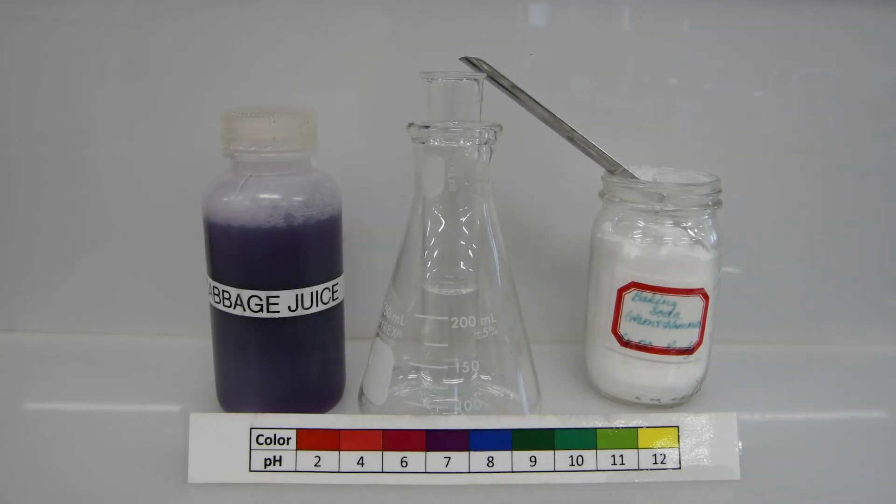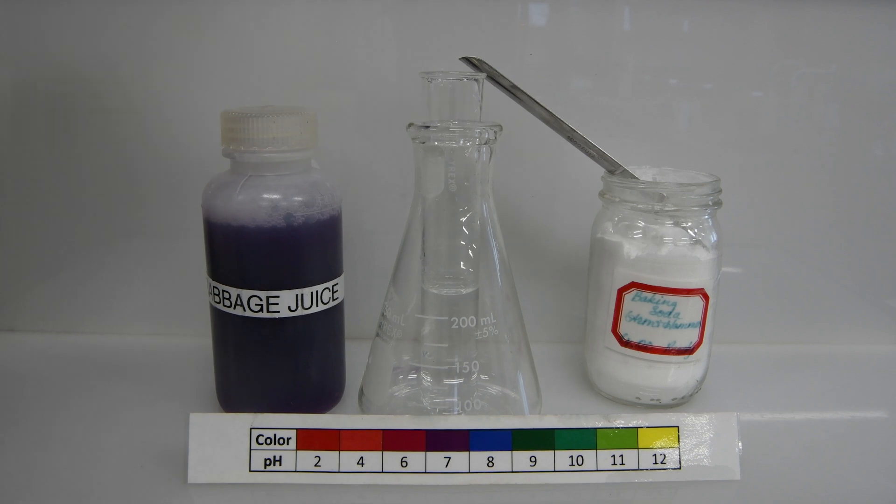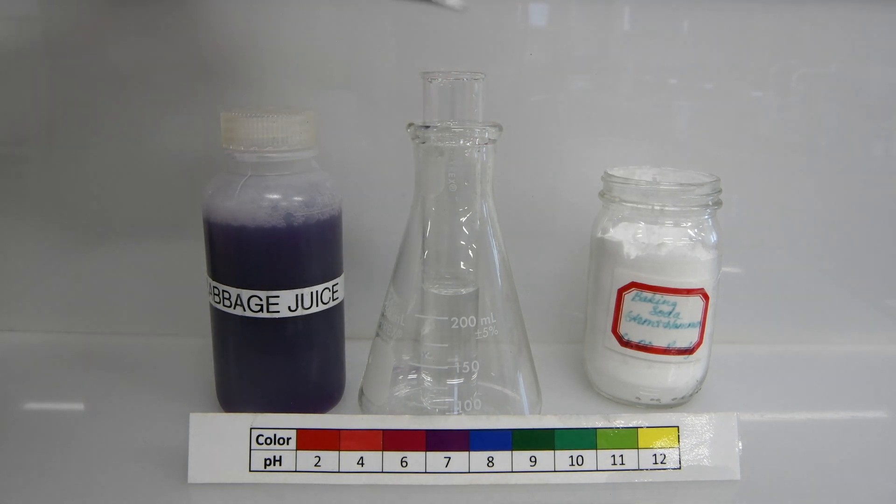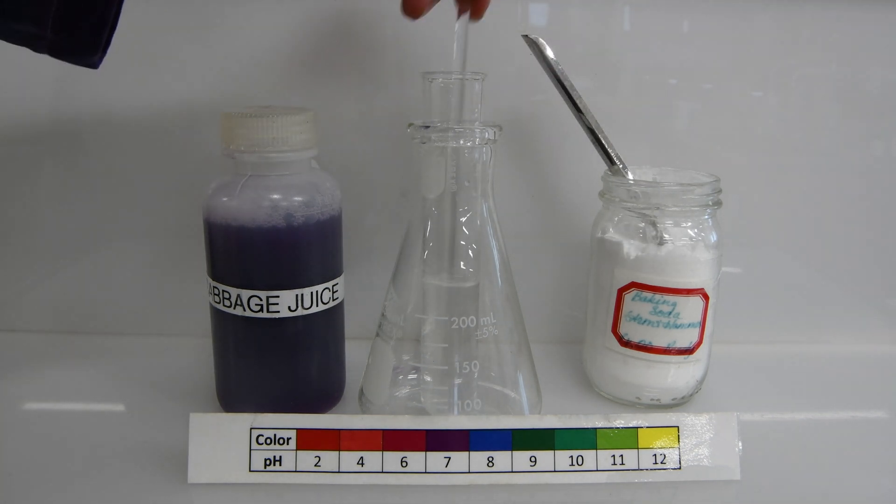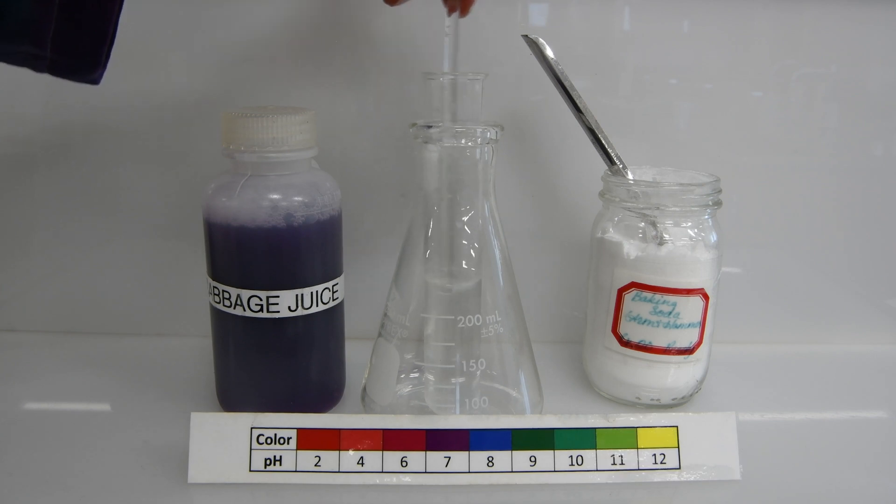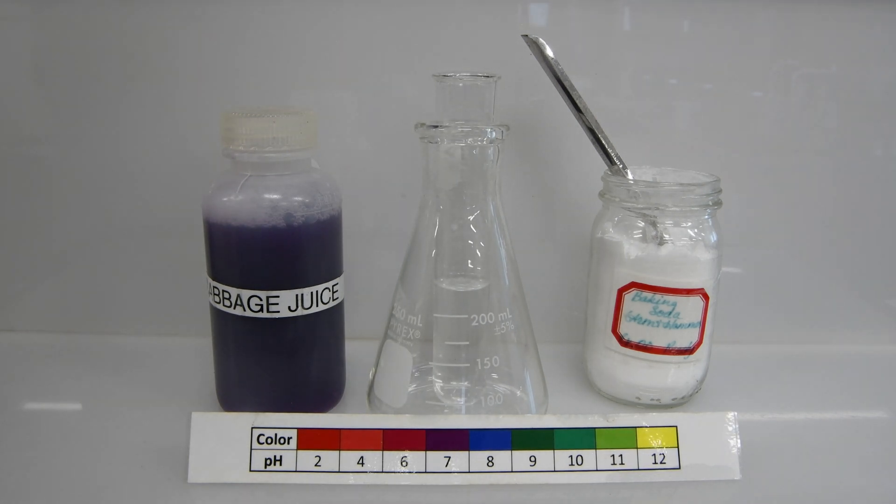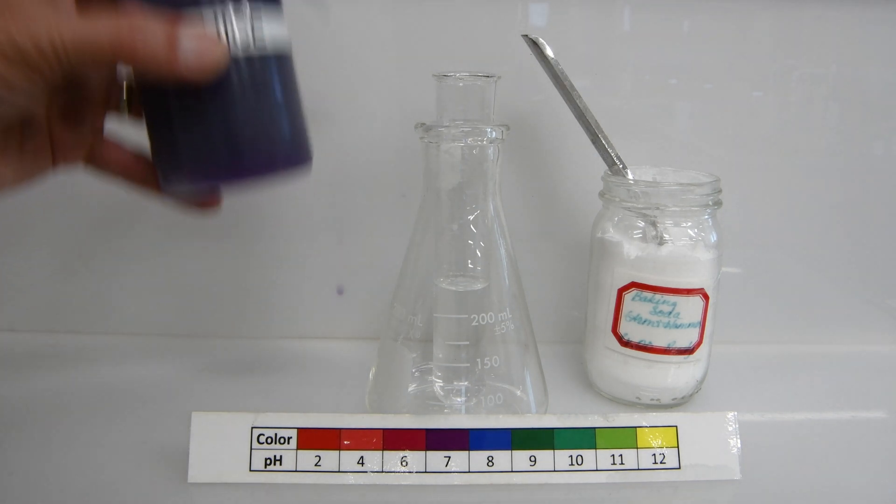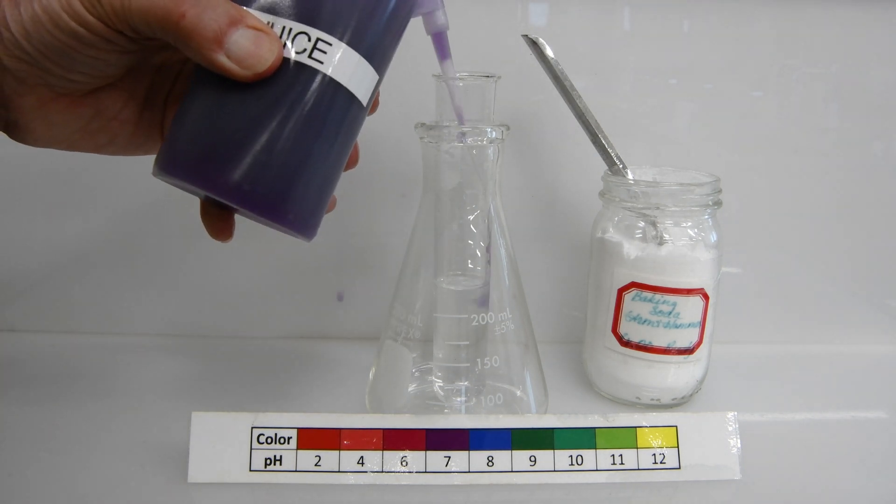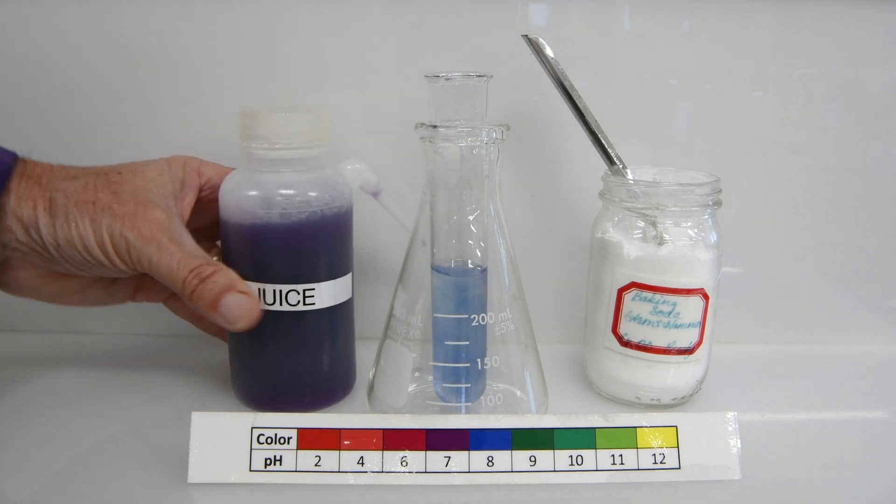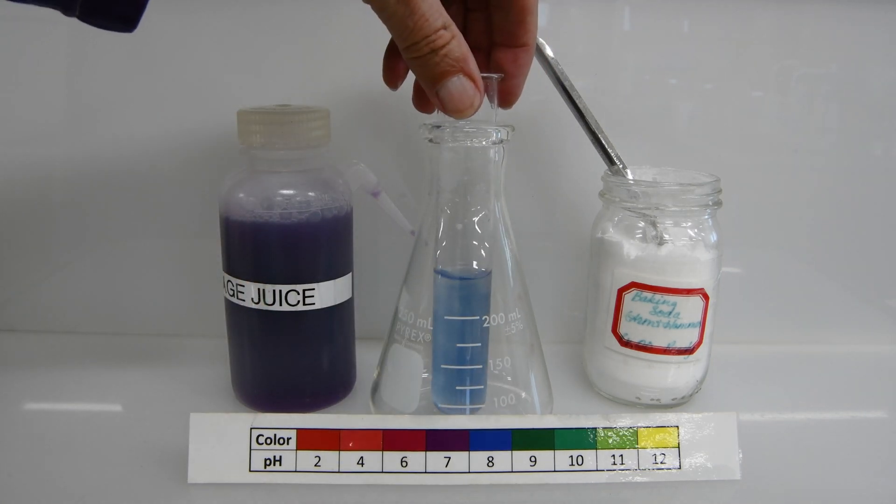Next up, we'll be testing some baking soda. I've already had the water in the test tube. So let's just add a small amount of the baking soda. We'll go ahead and get that stirred up to make sure it dissolves. And then we'll go ahead and add our cabbage juice. Ooh, and this time it's formed a very lovely blue color. It looks a bit like robin's egg blue.